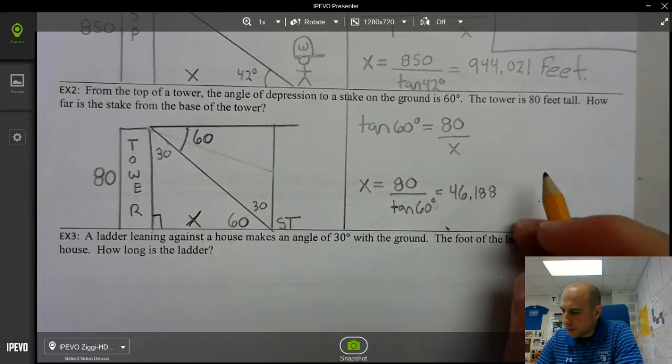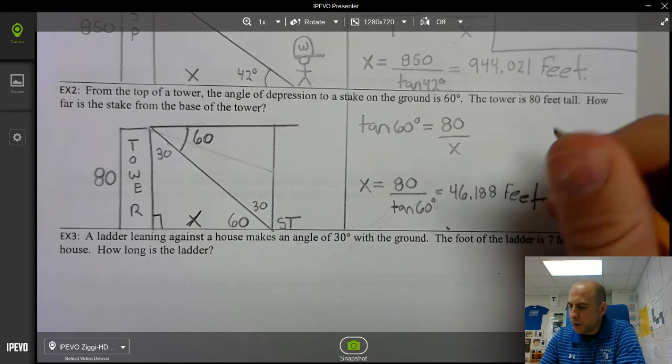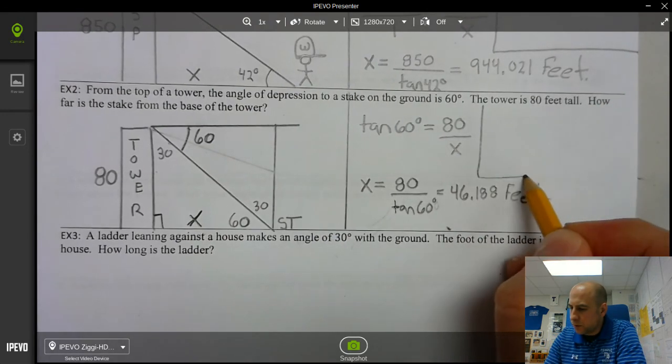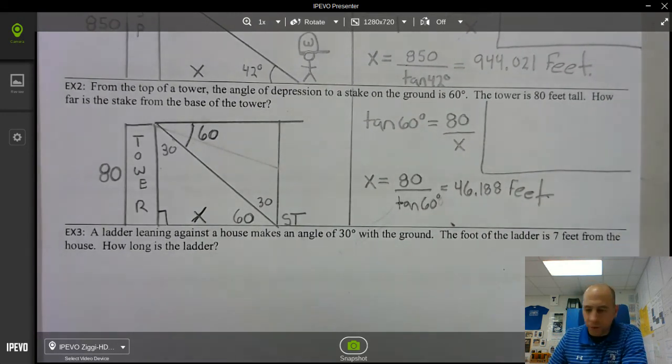Alright. And so that is, I believe, feet. And I'm not going to do it in a video, but go ahead and do that. But go ahead and do step four, write a sentence. So you would say, the stake is 46.188 feet from the base of the tower.